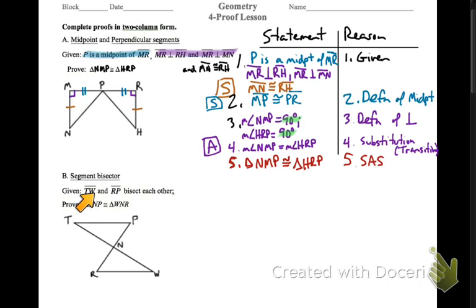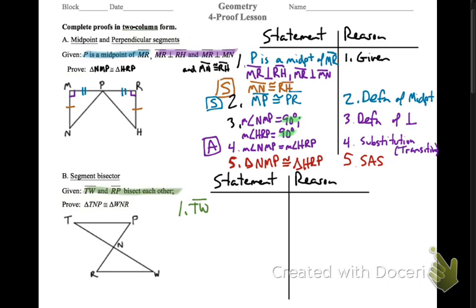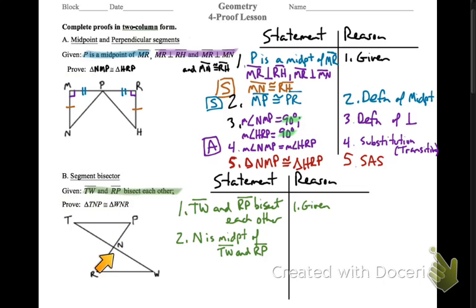Let's see what happens on the next one. We have this hourglass shape, and it tells us that these two segments — TW and PR — bisect each other. We're going to try to show that the triangle on top is congruent with the triangle on the bottom. All it tells us is that we have bisectors. But what does it mean to have segment bisectors? It's different than an angle bisector. Segment bisectors create midpoints. The point where these two segments intersect is the midpoint of each of these segments. That's the definition of a segment bisector.